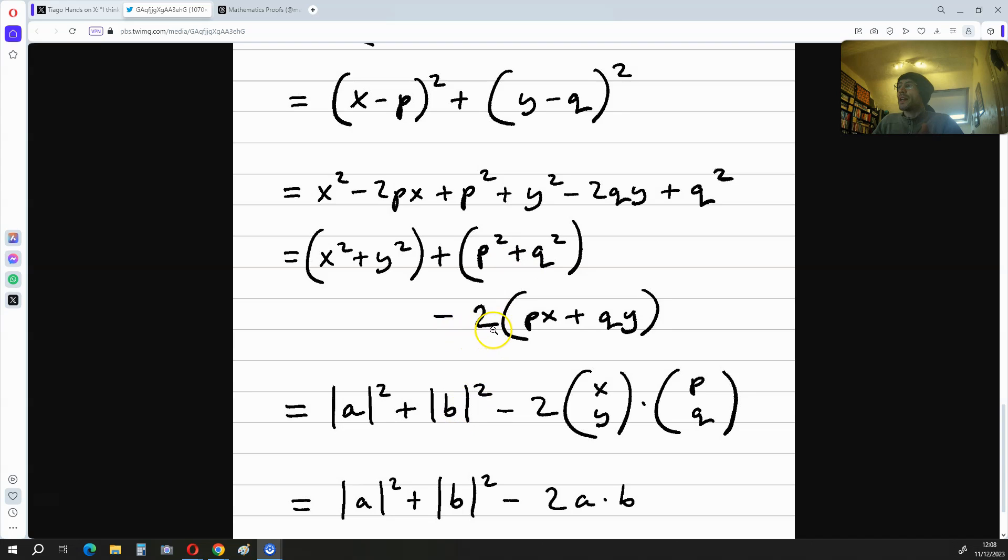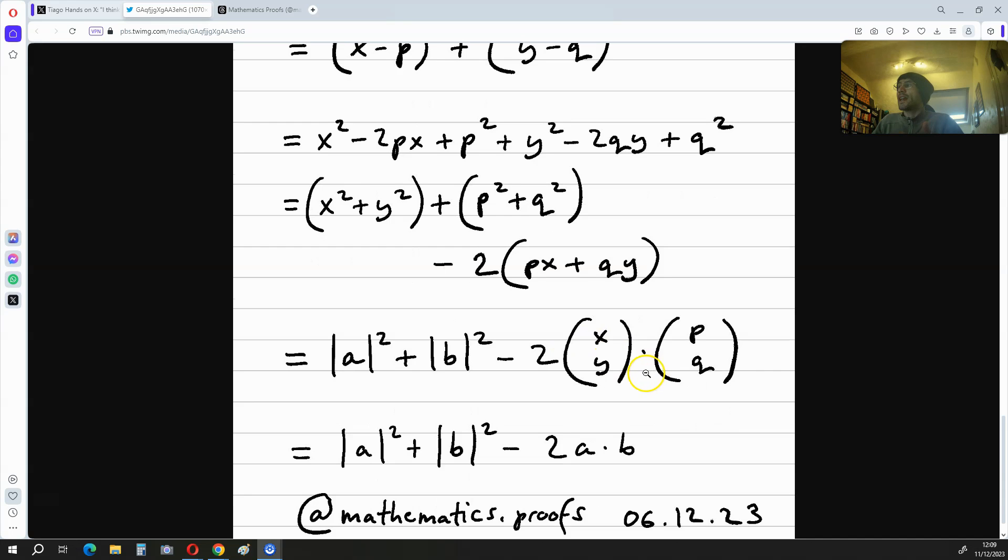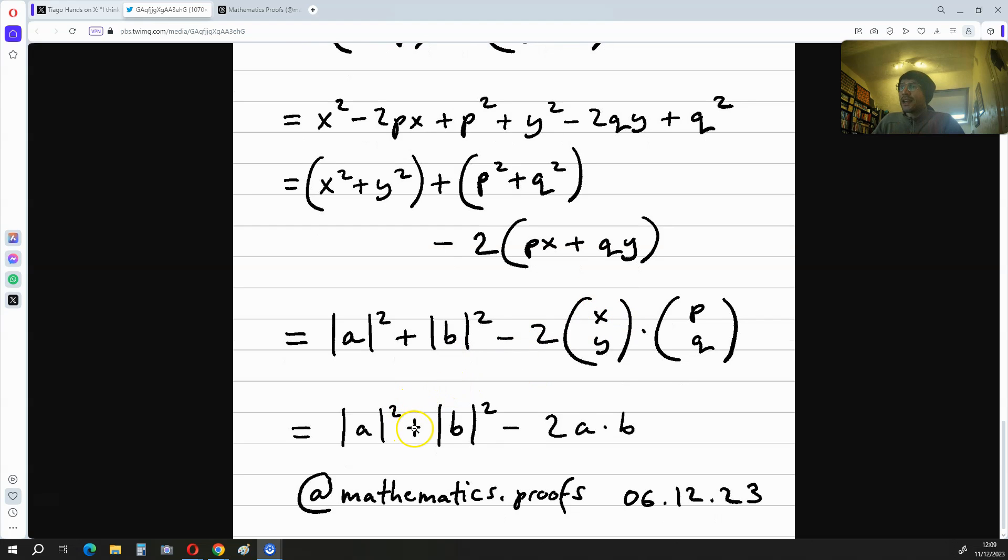And we've got minus two times px plus qy. But px plus qy is the same as the vector a multiplied by the vector b. So ultimately, we've shown that the magnitude of a minus b squared is equal to a minus b squared, which is equal to the magnitude of a squared plus the magnitude of b squared minus two times ab. And there we have it, our proof.